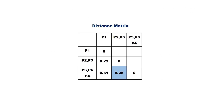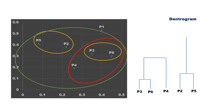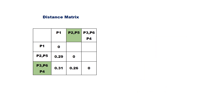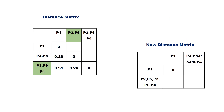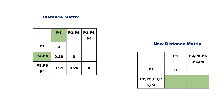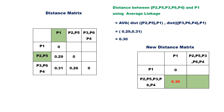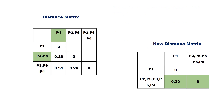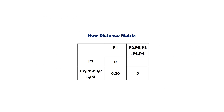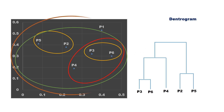The smallest value is 0.26, which is the distance between cluster P2,P5 and cluster P3,P6,P4. Form the new cluster P2,P5,P3,P6,P4 and update the dendrogram. Recalculate the distance matrix by replacing entries for P2,P5 and P3,P6,P4 with the new cluster. The distance between the new cluster and P1 is 0.30. Join the two remaining clusters to form the final cluster and update the dendrogram.